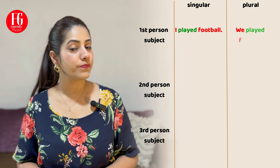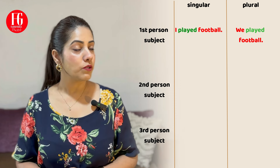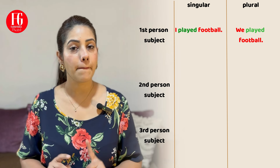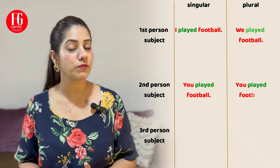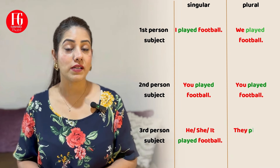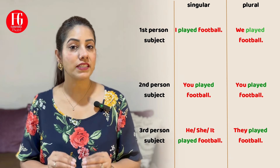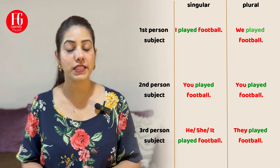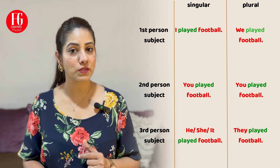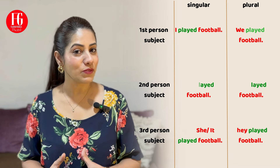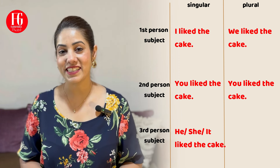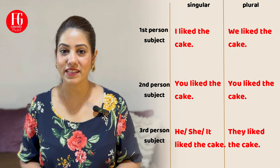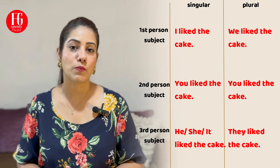For example: 'I played football. We played football.' Notice that we are using the second form of play — 'play' becomes 'played.' 'You played football. He played football. They played football.' There is no confusion here — we simply use the past tense form, the second form of the verb, for all subjects whether singular, plural, first person, second person or third person. Another example: 'I liked the cake. We liked the cake. You liked the cake. He, she, it, or any name liked the cake. They liked the cake.' For every subject we are simply using the second form of the verb.